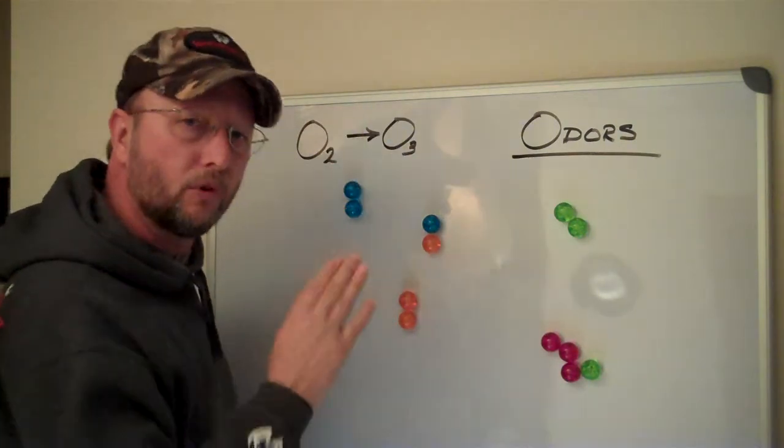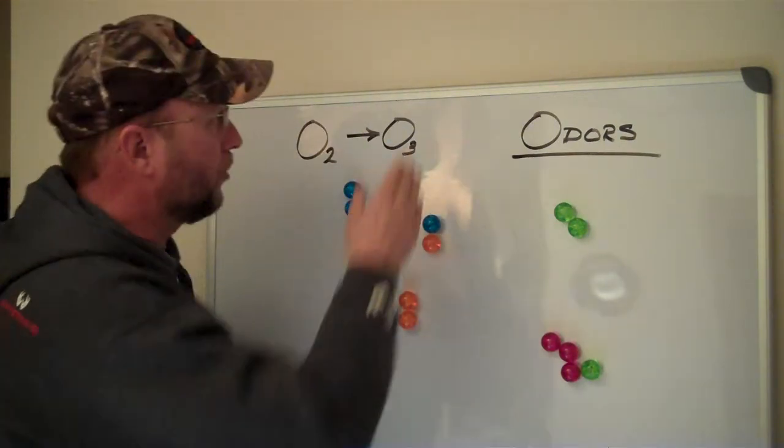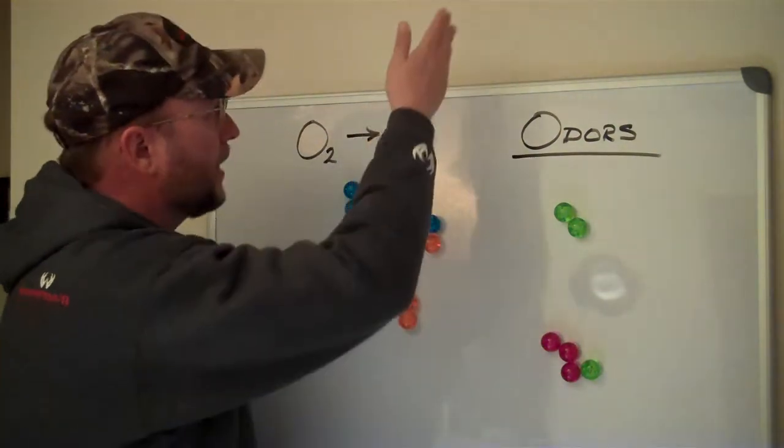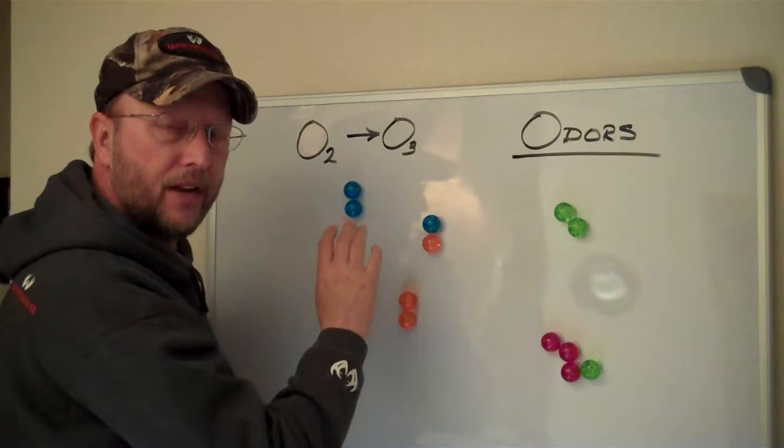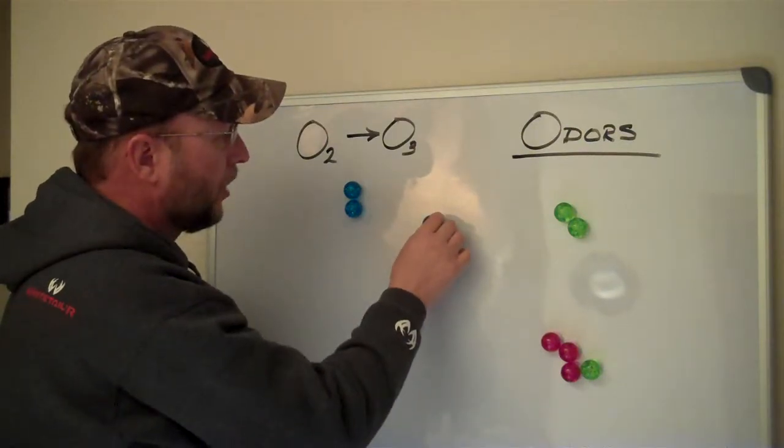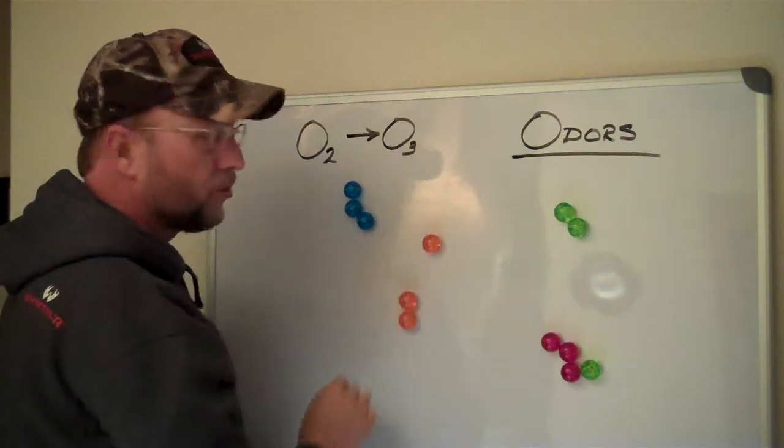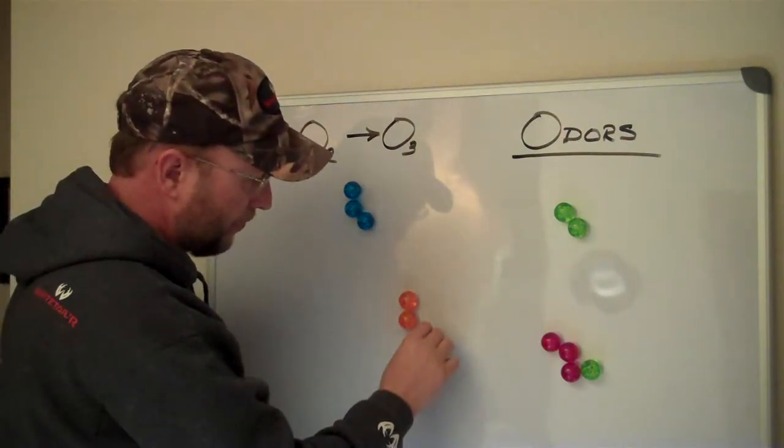Now, in Mother Nature, one of the most common ways that this occurs is through the use of electricity, i.e. lightning. Lightning coming down, coming in contact with the oxygen, and splitting off some of these O2 molecules into creation of an O3, and another one.